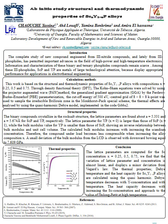The calculated bulk modulus increases with increasing scandium concentration; therefore the alloys become less compressible when increasing the alloy composition X. A small deviation of the bulk modulus from the linear concentration dependence (LCD) is observed, with a downward bowing equal to 7.60 GPa.